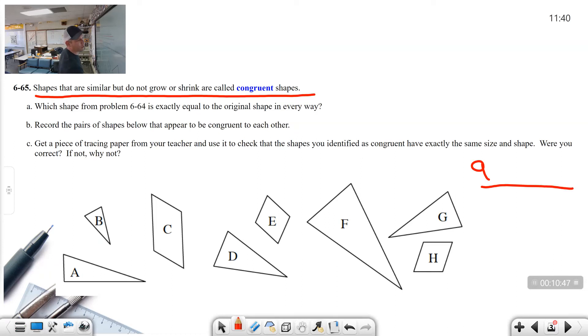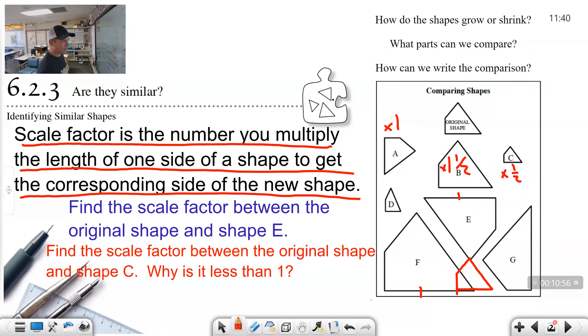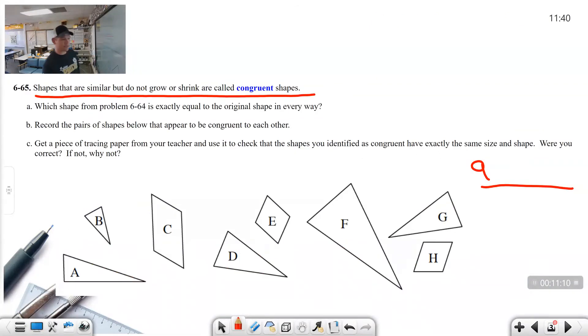Now, problem letter A. You're going to write off to the side. You have room over here to write letter A. Which shape from problem 64 is exactly equal to the original shape in every way? So I'm looking at these, which of these, A, B, C, D, E, F, G, is exactly the same as the original? Well, shape A is identical in every way. So in 65, let's record A. Shape A is identical to the original. Now, we use the word identical because it matches. That's the words we've been using up until now. Today, we're going to introduce the word congruent. That means does not grow, does not shrink. They're similar. They're like the same shape. But they're not the same shape as in they're two different shapes. You have the original and you have A. They're two shapes. They are similar. They match. They are identical. They are congruent.